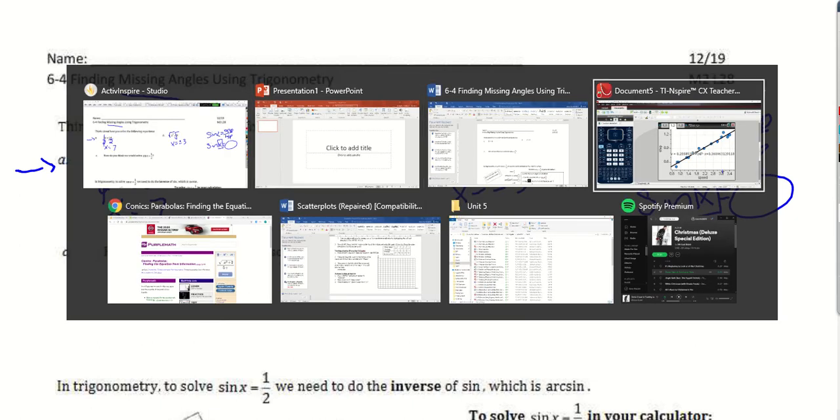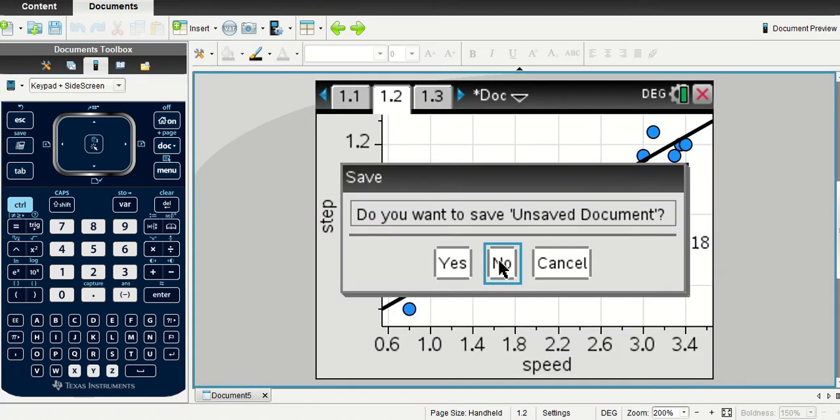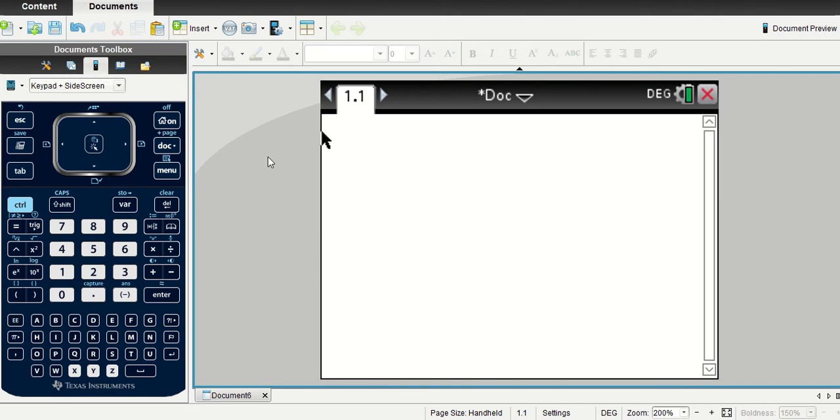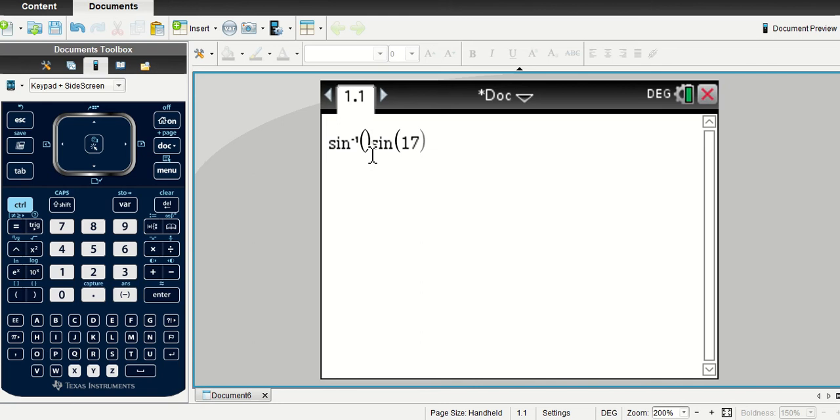What I want you to notice is, we're going to open a calculator page. I want you guys to hit trig and hit sine and pick any number. Pick a number, whatever you want. I'm going to pick 17. And what I'm going to do is, I'm going to go in front of this and insert something. I'm going to go trig again and this time I'm going to pick the sine inverse. And see how I'm going to get sine inverse of the sine of 17.